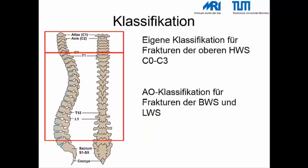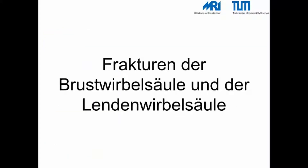HWS-Verletzungen werden nach eigenen Klassifikationen unterschieden. Für die übrige Wirbelsäule gilt die AO-Klassifikation. Aufgrund ihrer Gemeinsamkeit soll im Folgenden zunächst die Frakturen der BWS und LWS dargestellt werden.